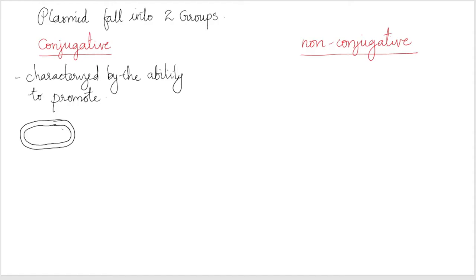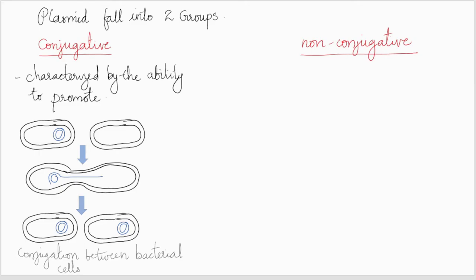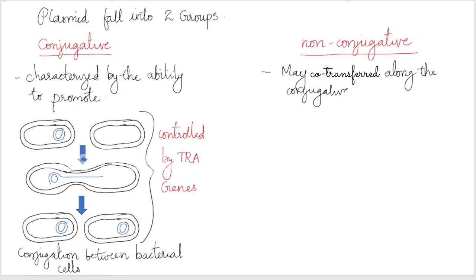Plasmids fall into two groups: conjugative and non-conjugative. Conjugative plasmids are characterized by the ability to promote sexual conjugation between bacterial cells, a process that can result in a conjugative plasmid spreading from one cell to all the other cells in the bacterial culture. Conjugation and plasmid transfer are controlled by a set of transfer or tra genes, which are present on conjugative plasmids but absent from the non-conjugative type.